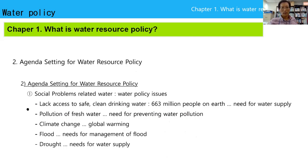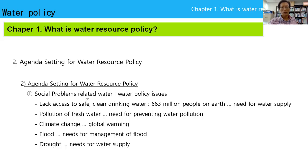In the specific area of agenda setting for water resource policy, there are many water policy issues: lack of access to safe and clean drinking water — 663 million people on earth need water supply. Pollution of fresh water, need for preventing water pollution. Climate change and global warming. Flood — need for management of flood. Drought — need for water supply. All of these are social problems related to water.